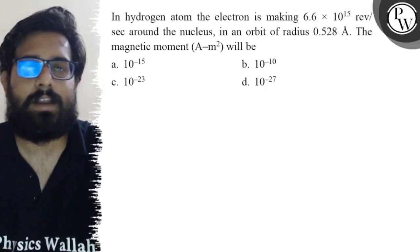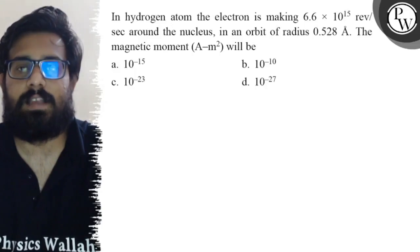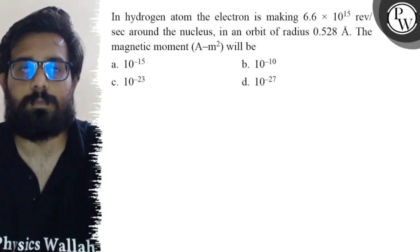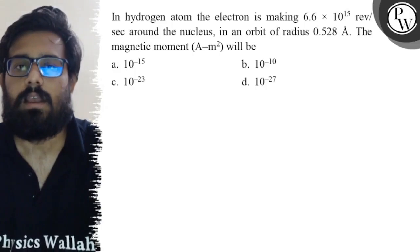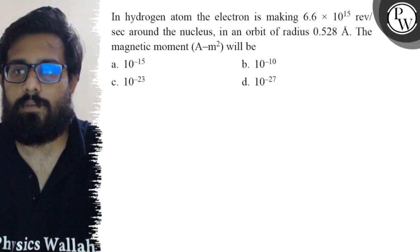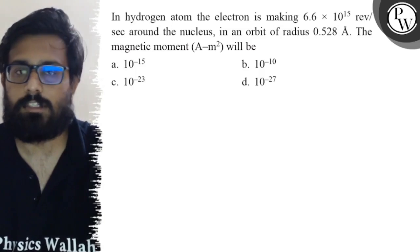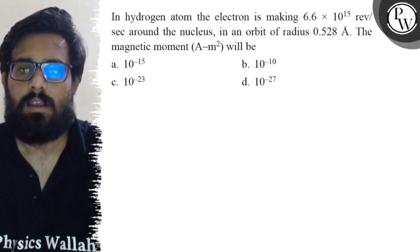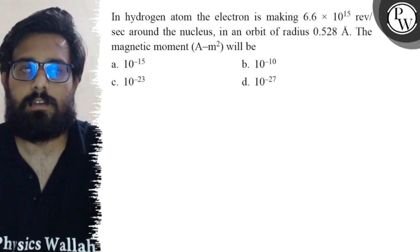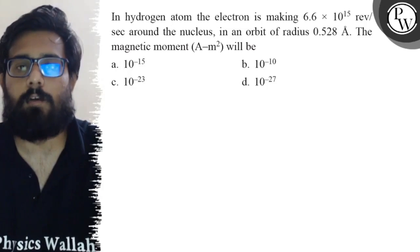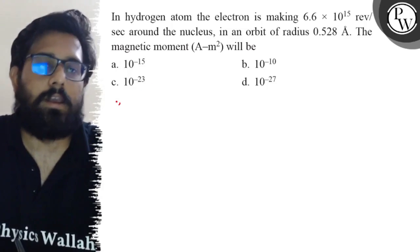Let's see the question. In hydrogen atom, the electron is making 6.6 × 10^15 revolutions per second around the nucleus in an orbit of radius 0.528 angstrom. The magnetic moment will be: your first option is 10^-15, second option is 10^-10, your third option is 10^-23, and your fourth option is 10^-27.